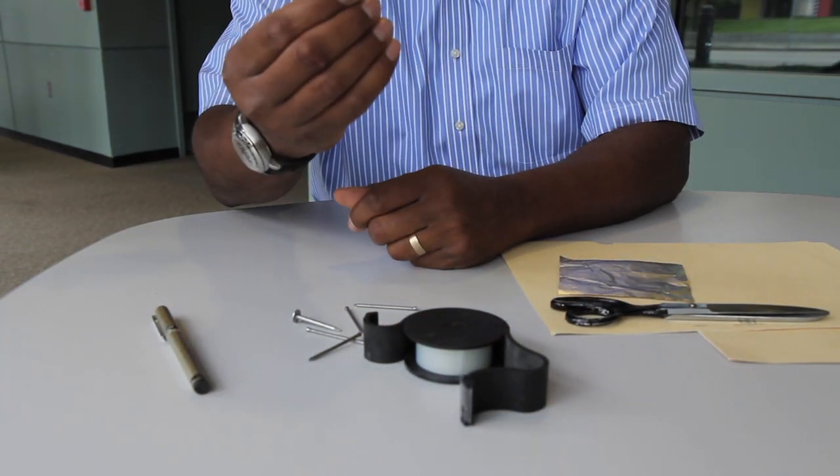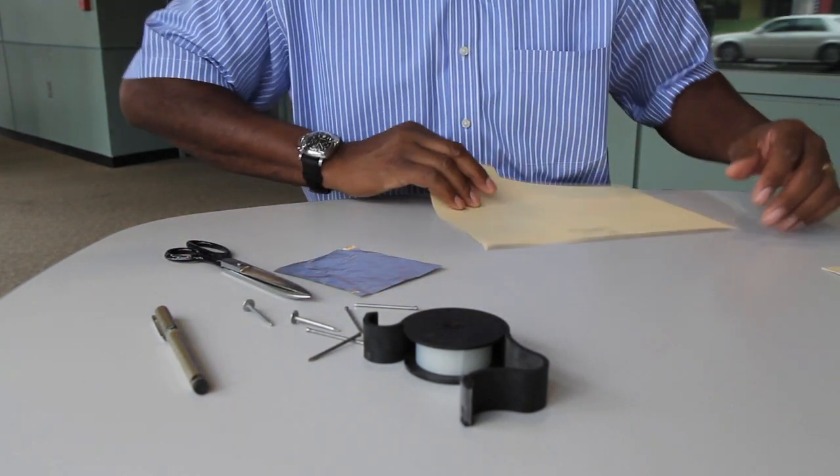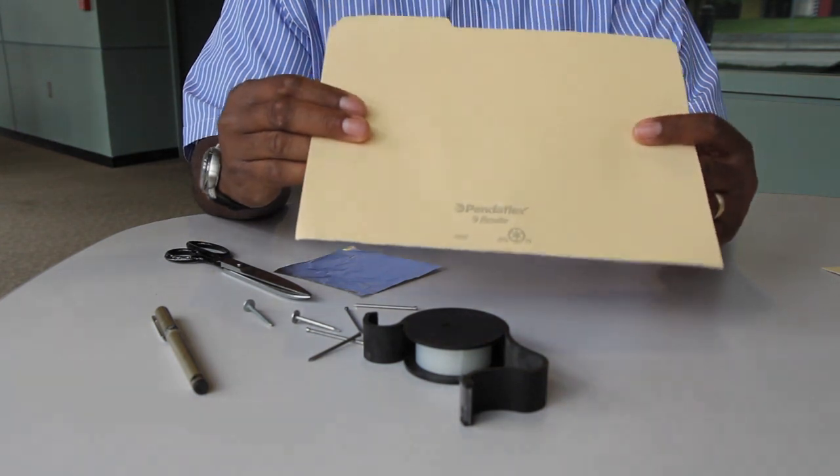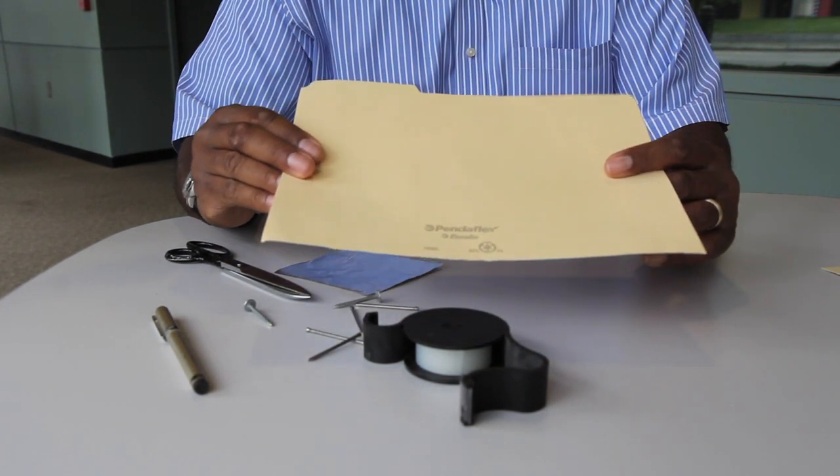So, let's proceed. First what we have to do is cut a hole in this manila folder. And that hole can be about an inch or two inches square. So let's get started with that.